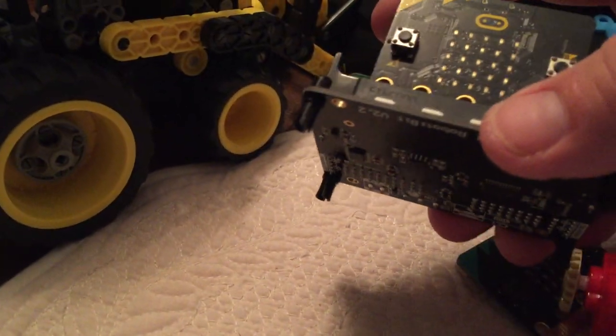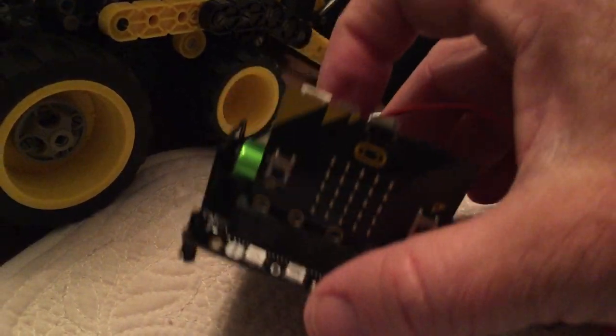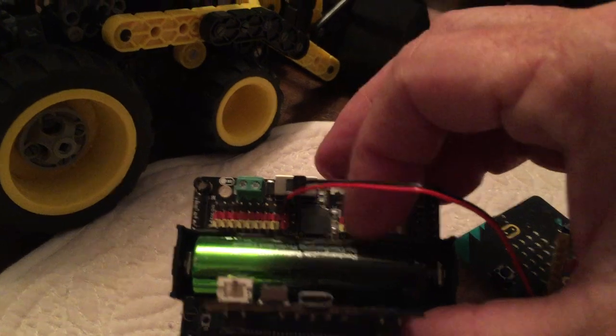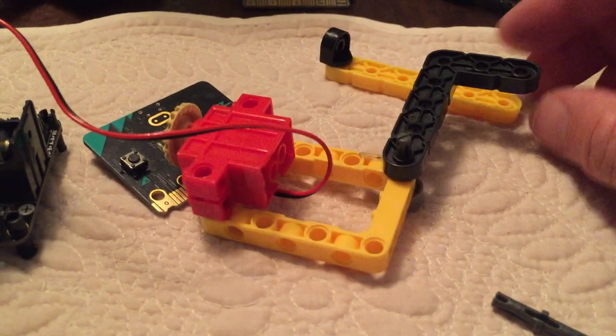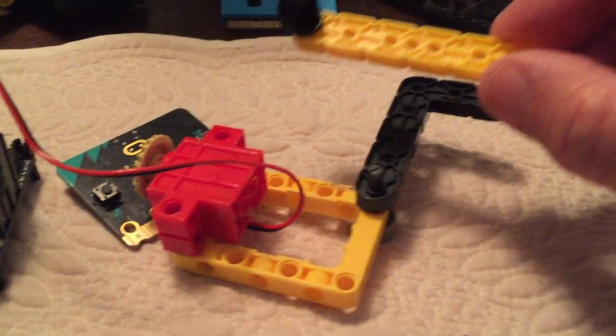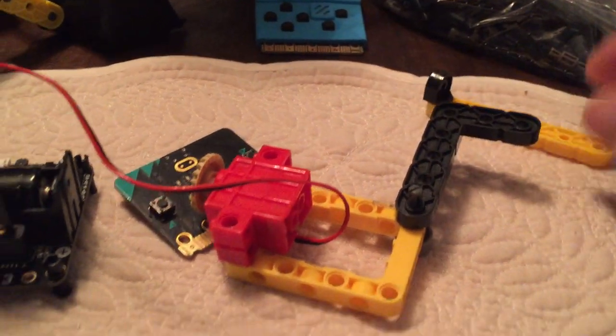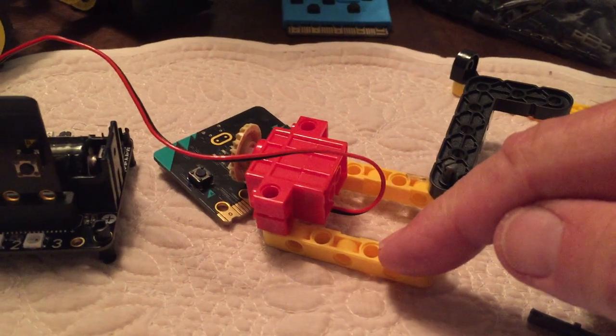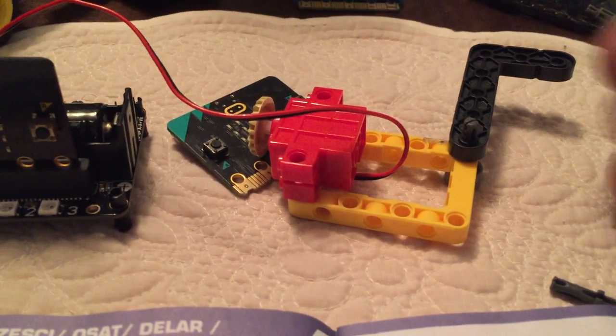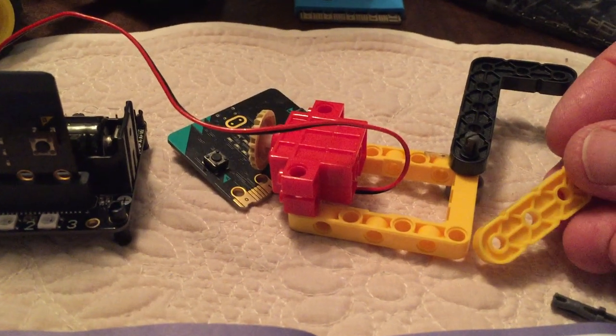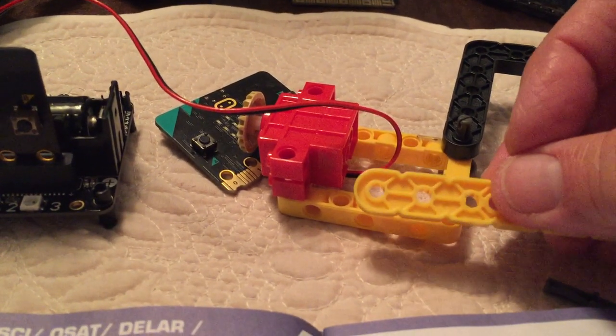This one's called the robot bit. How do we get these vex parts to attach to these Lego parts? The holes are not the same. The holes are different sizes and there's a different pattern in spaces.